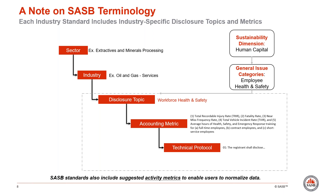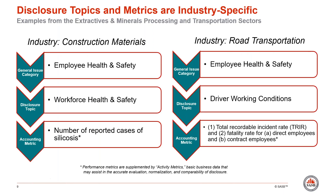Let's look at some specific examples of human capital disclosure topics. In this example, we are looking at two different industries and sectors: the construction materials industry, which is in the extractives and minerals processing sector, and the road transportation industry within the transportation sector. Both industries share the same human capital general issue category, employee health and safety. However, they begin to differ at the disclosure topic level to address industry specific and financially material issues. For example, in the construction materials industry, general workforce health and safety is a key concern in this labor-intensive industry with high exposure to dangerous materials like silica.